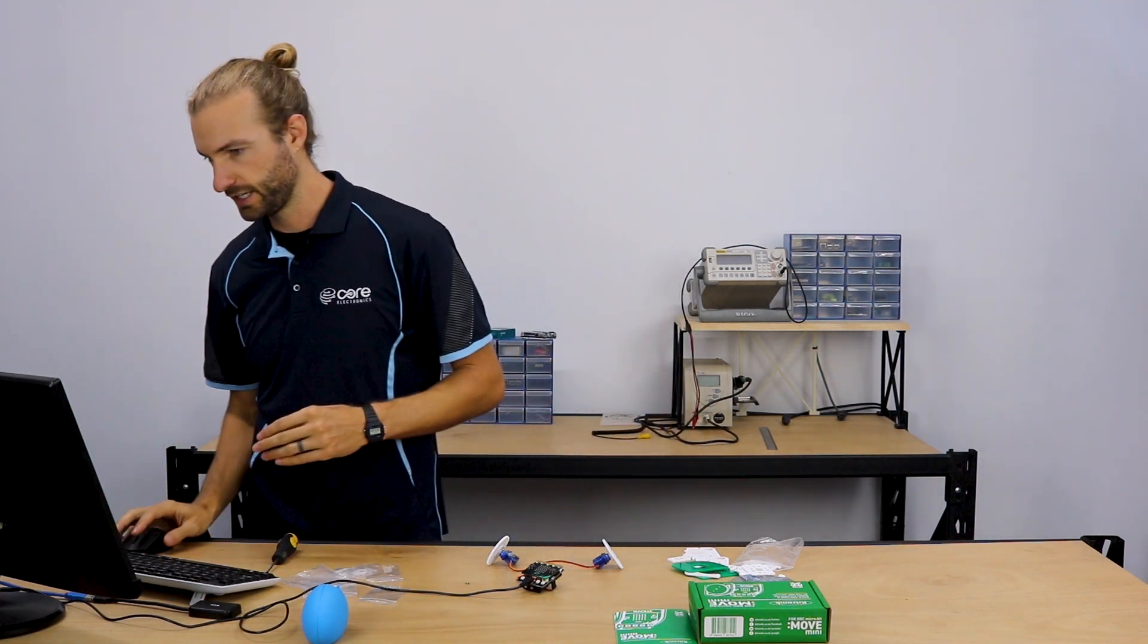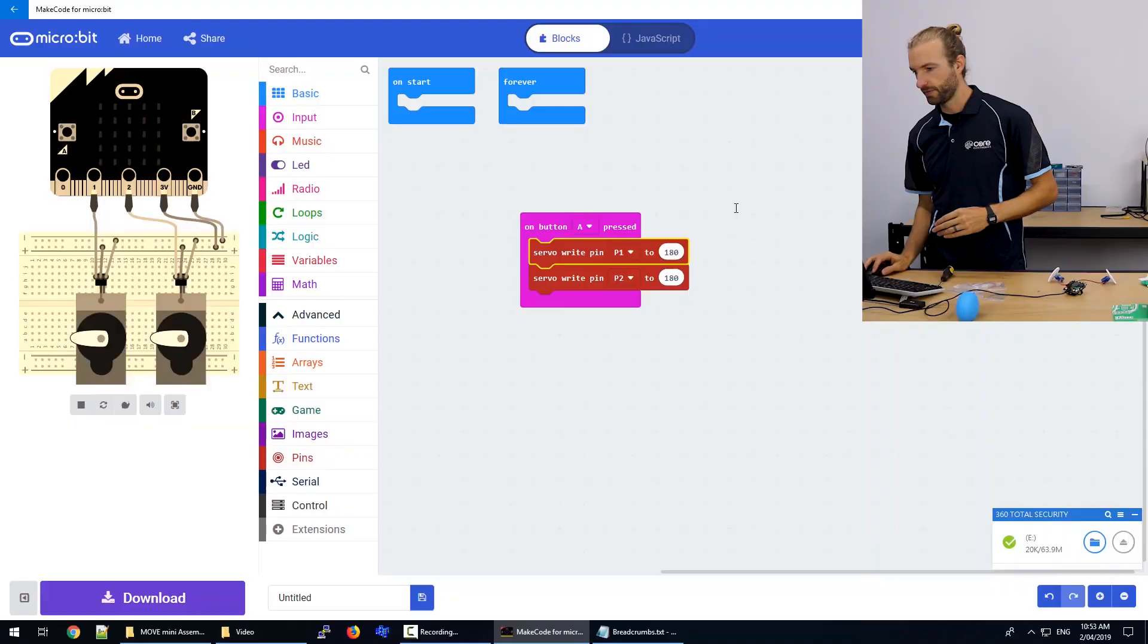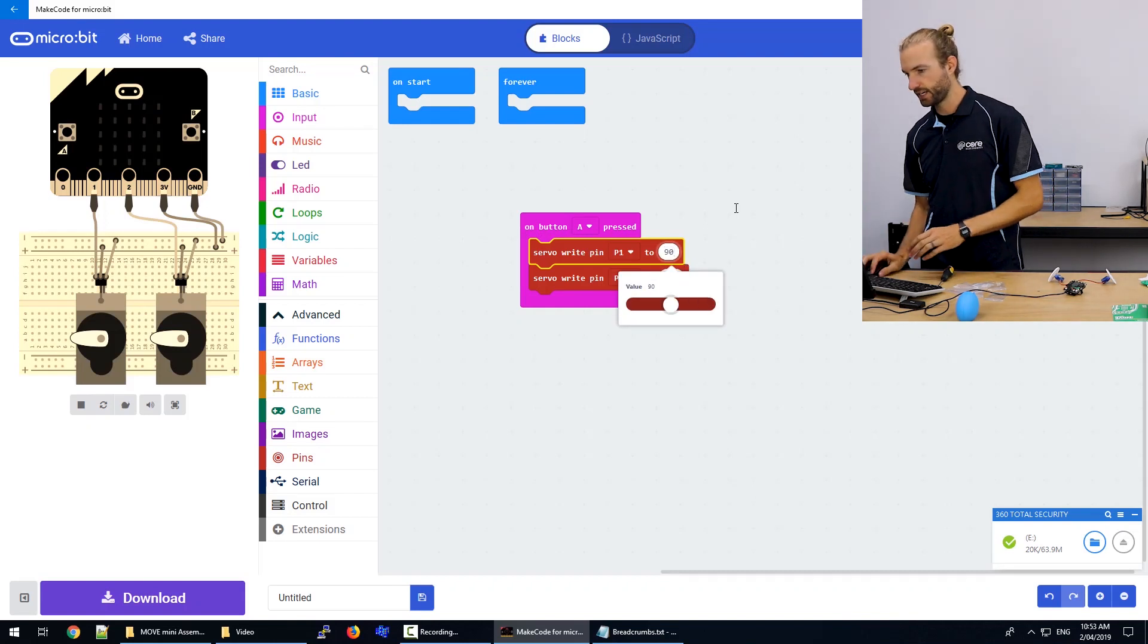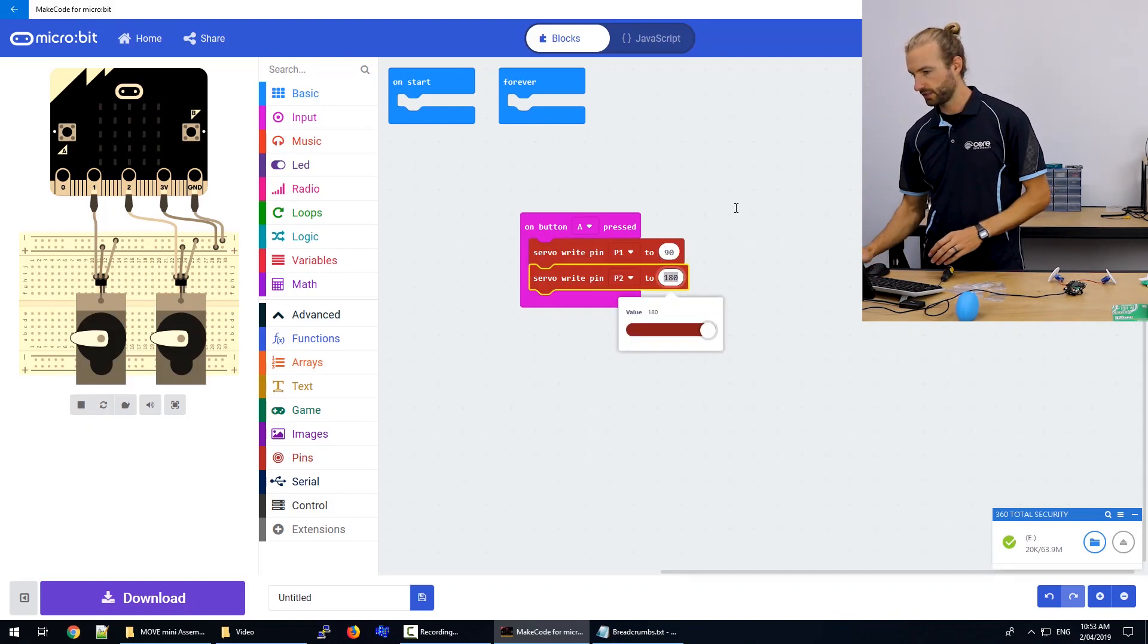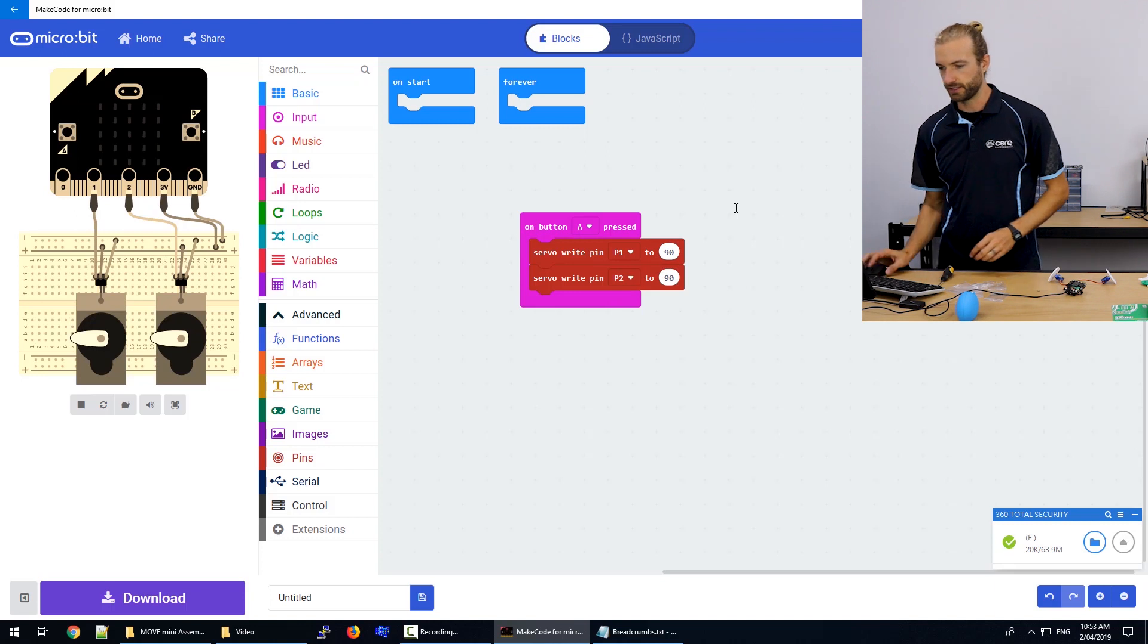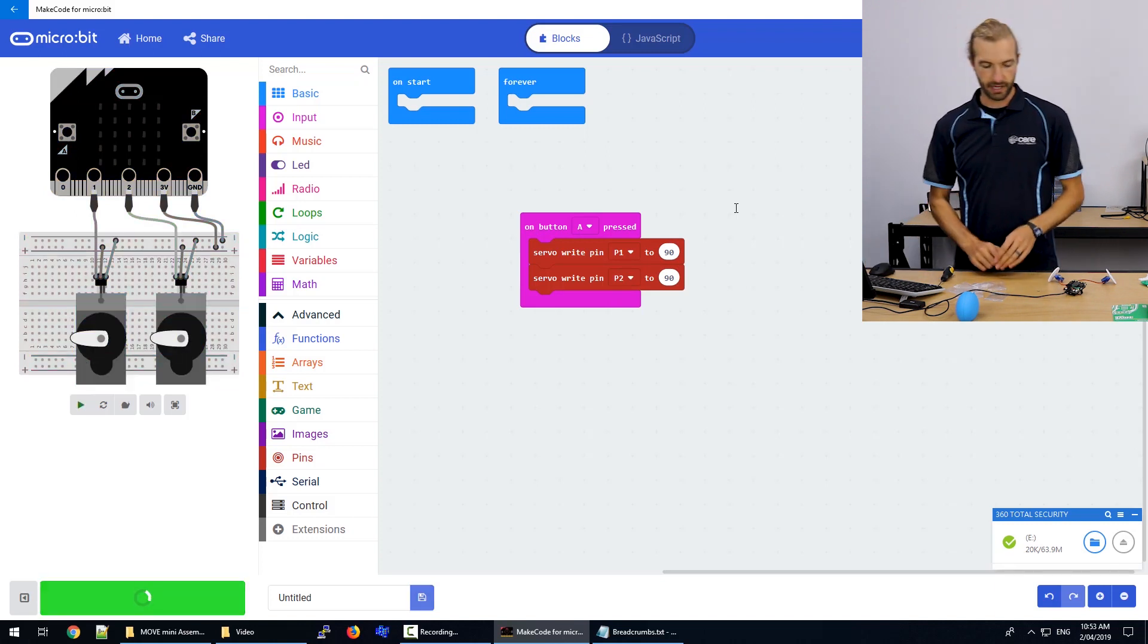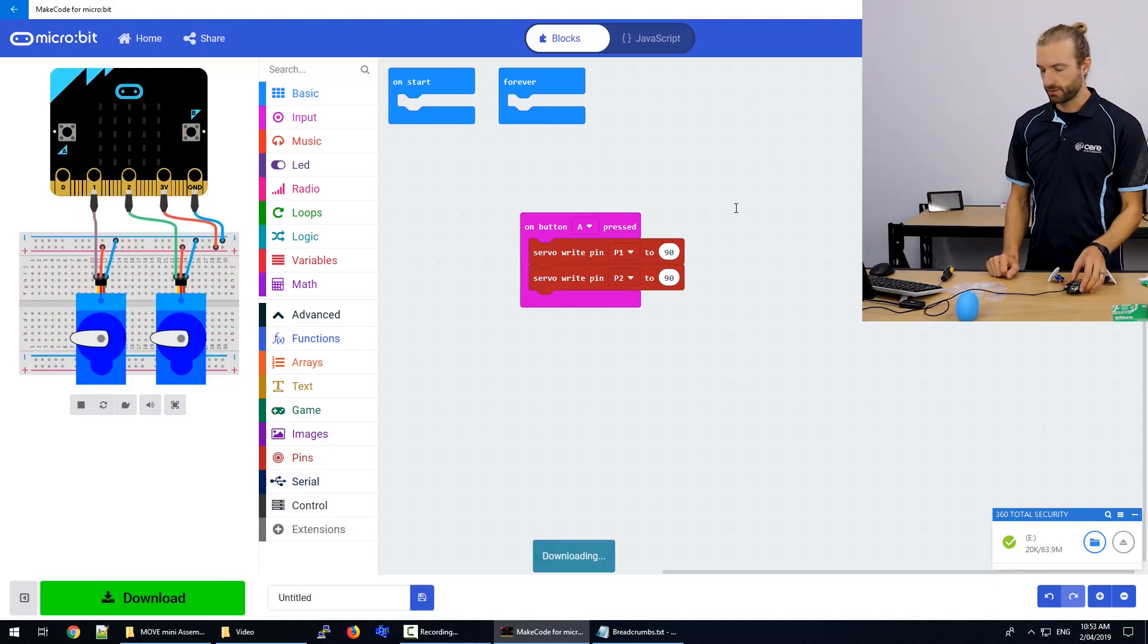So we're going to change the servo write pins to P1 and P0. And how a continuous servo works is if you send 180 to it, then it'll go full speed one way. If you send zero, it'll go full speed the other way. So if you send 90, then it will stay still.